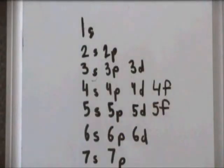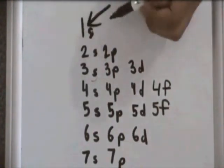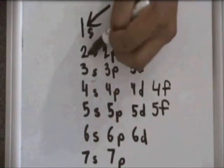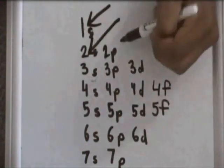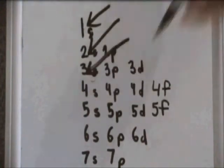Electrons have to fill up in a certain order. First they fill through sub-level 1S, then sub-level 2S, then sub-level 2P, then 3S.